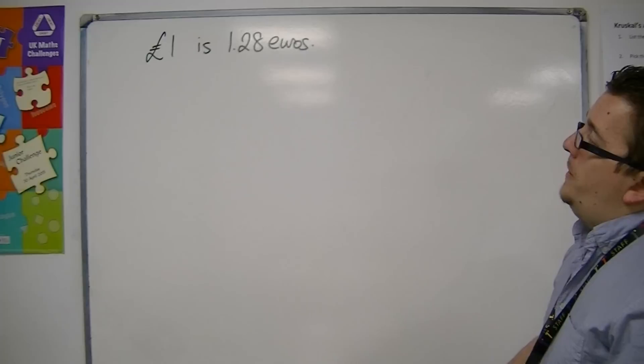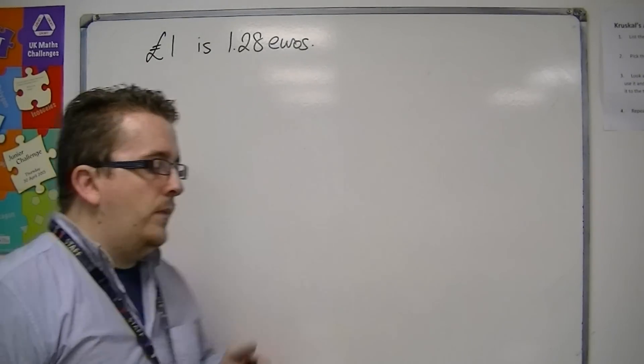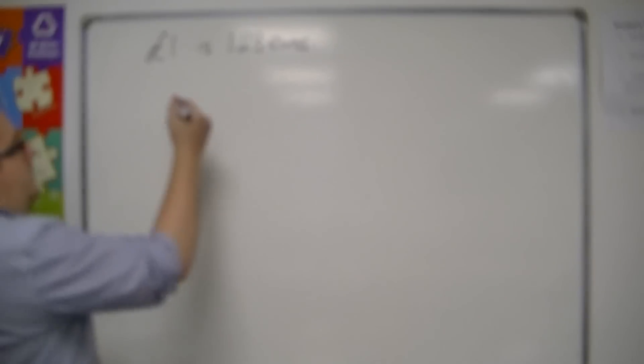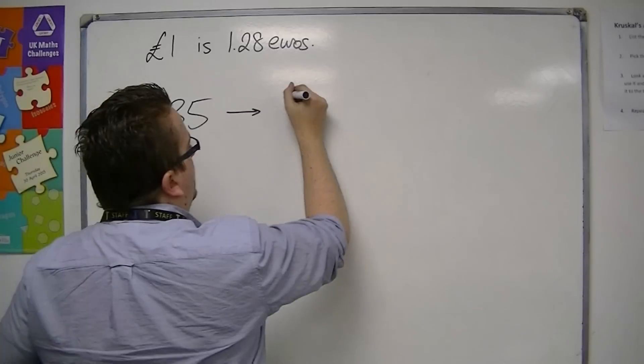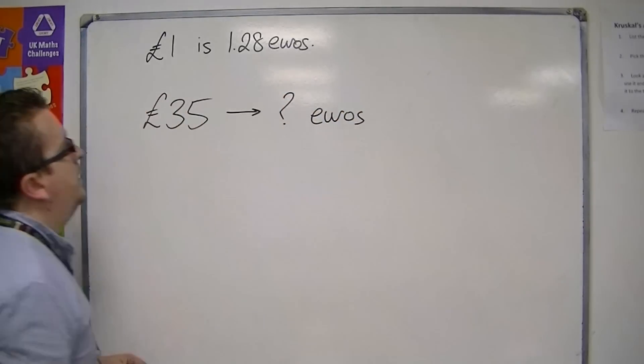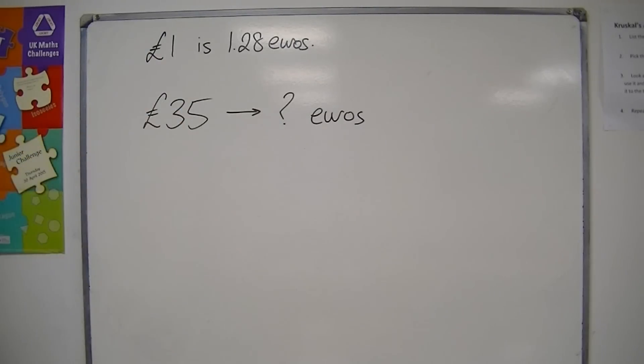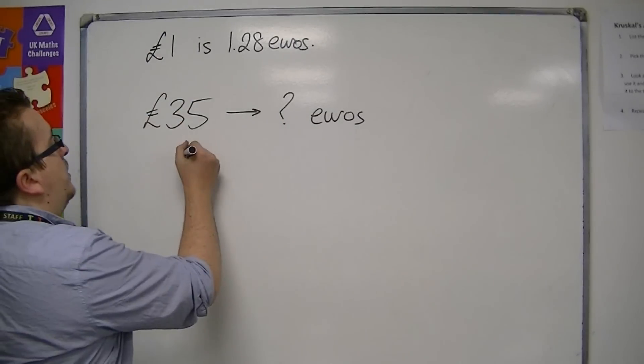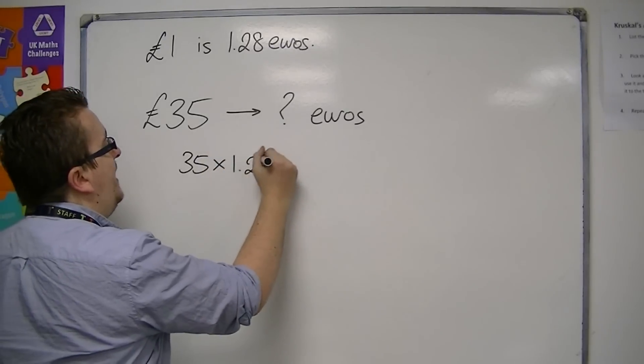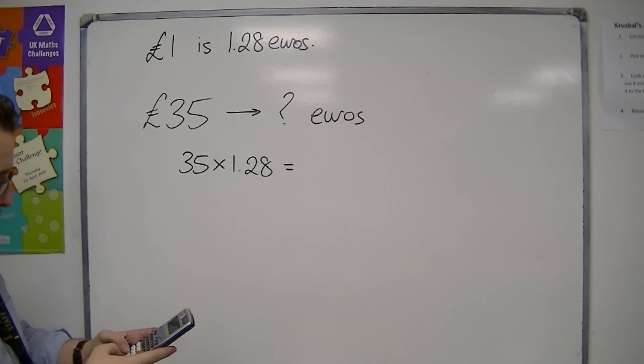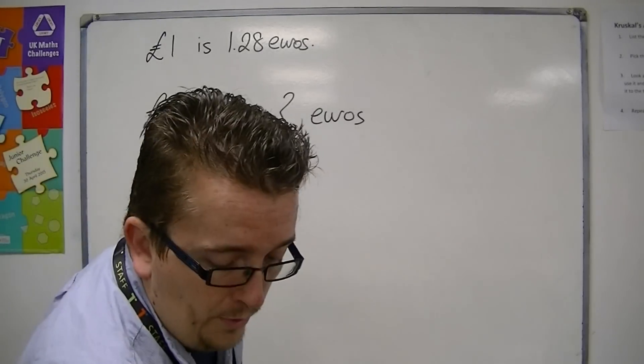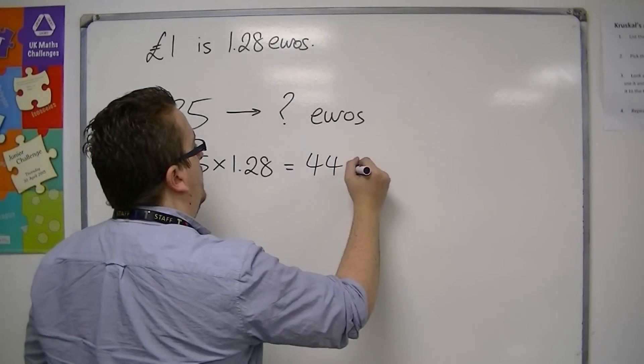So one pound is 1.28 euros. So let's say I want to change, I go into a bureau de change and we want to change 35 pounds into euros. Well one pound will get me 1.28 euros, so 35 pounds will get me 35 lots of 1.28 euros. So we do that on our calculator.